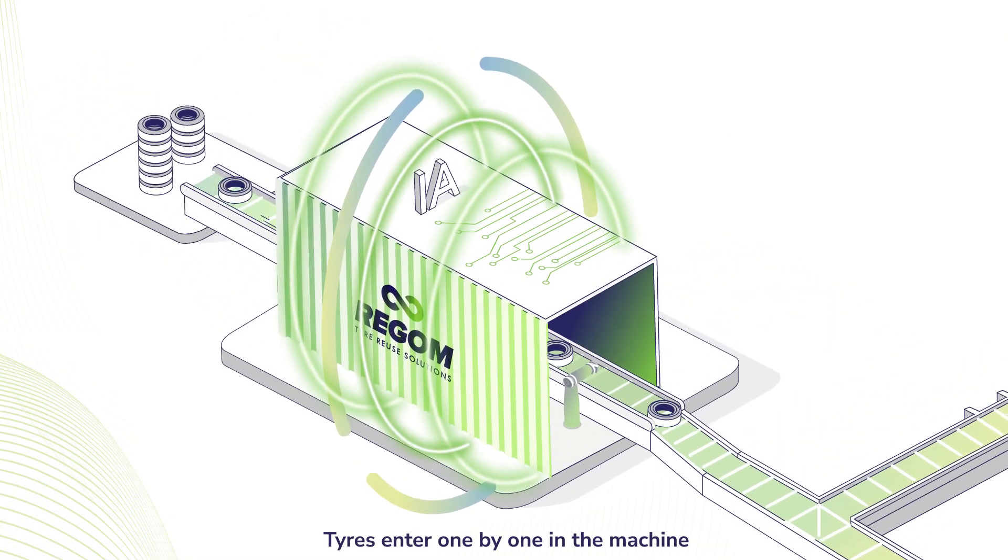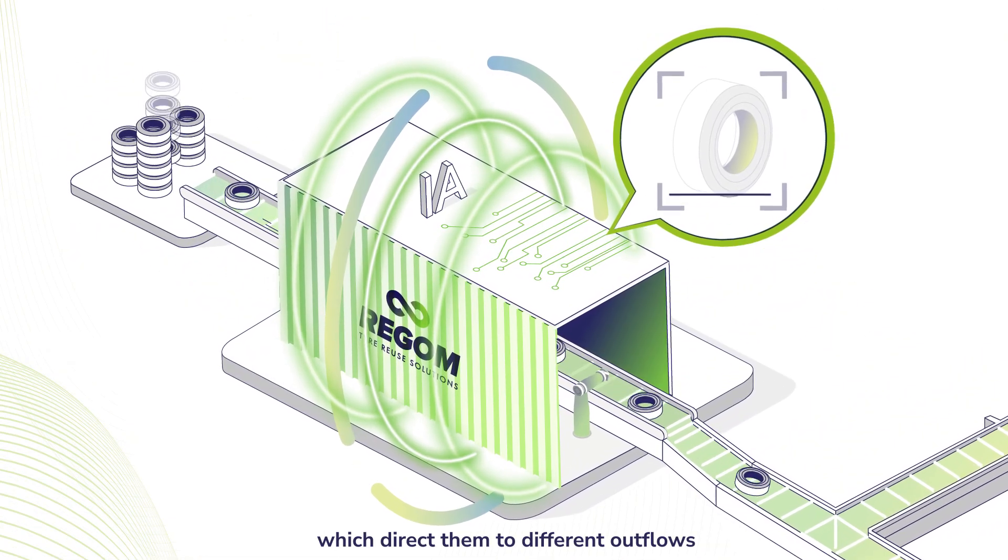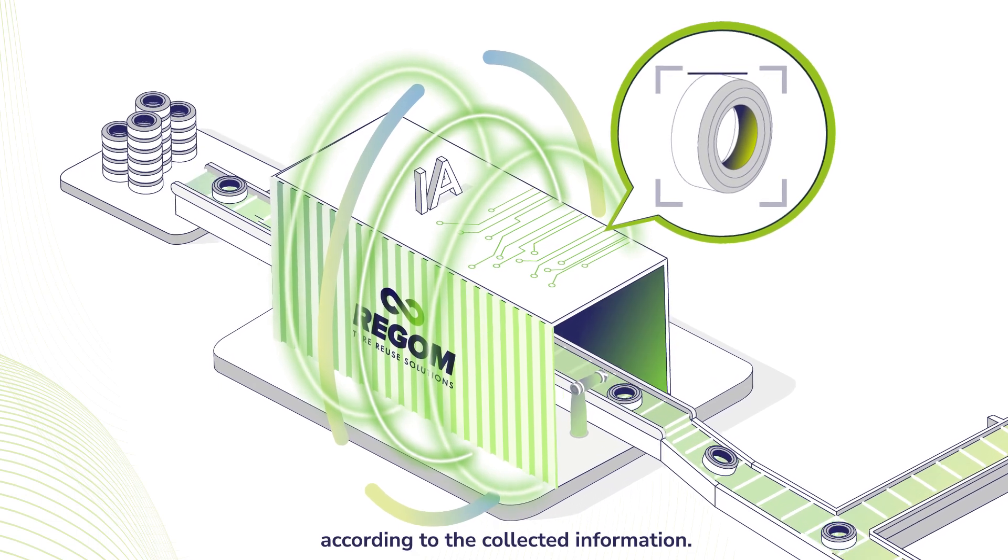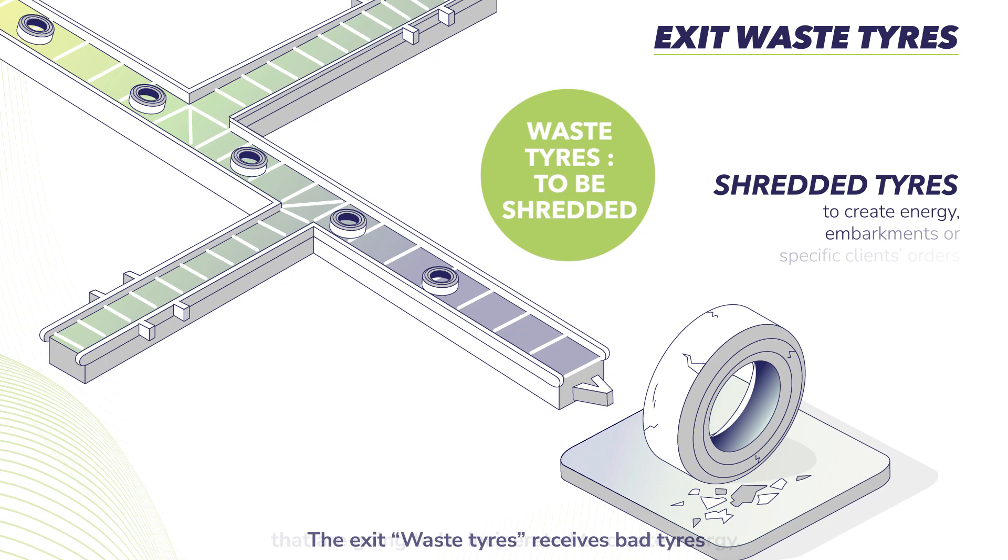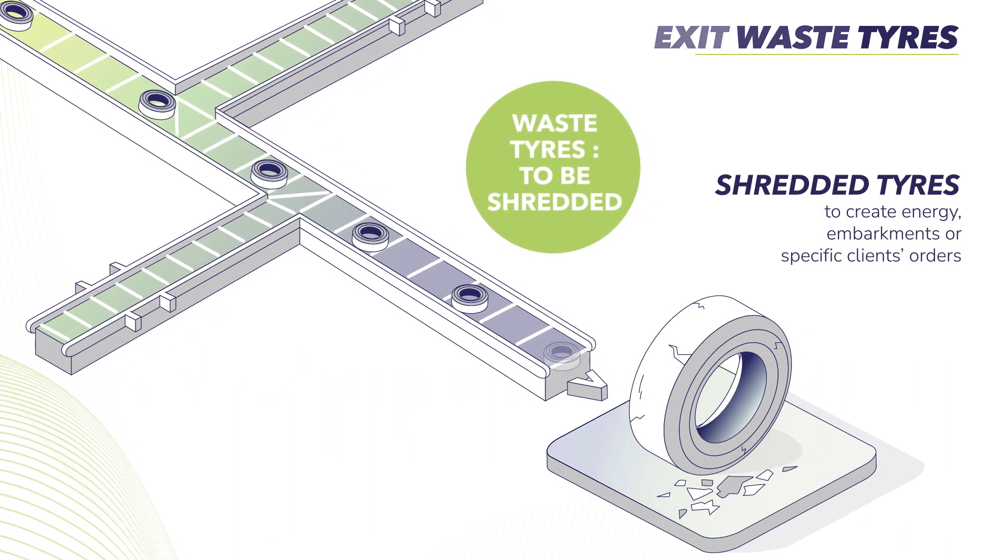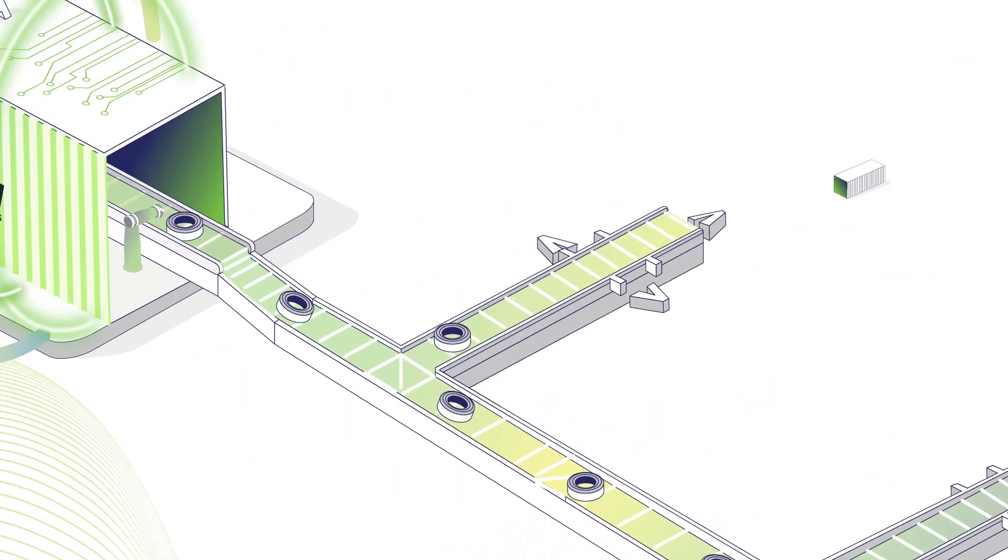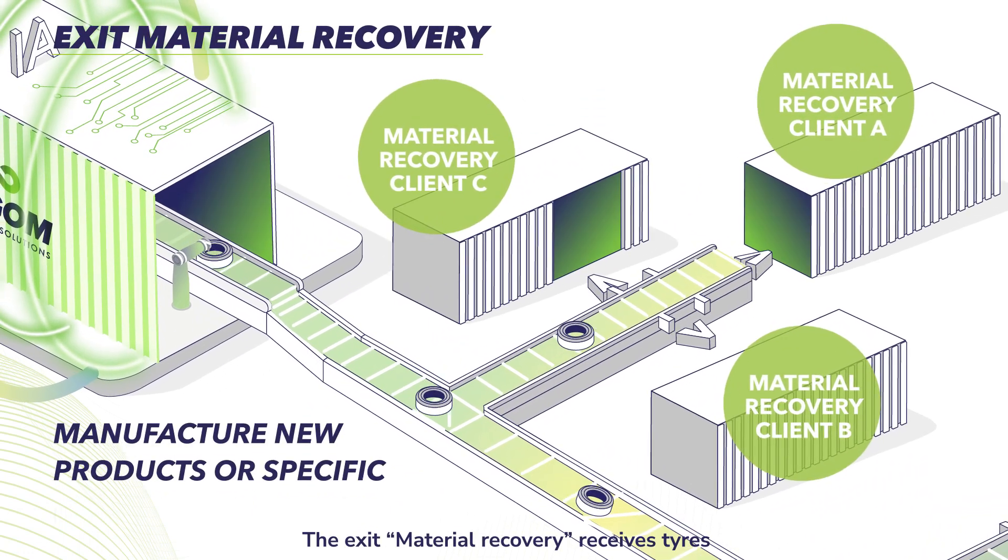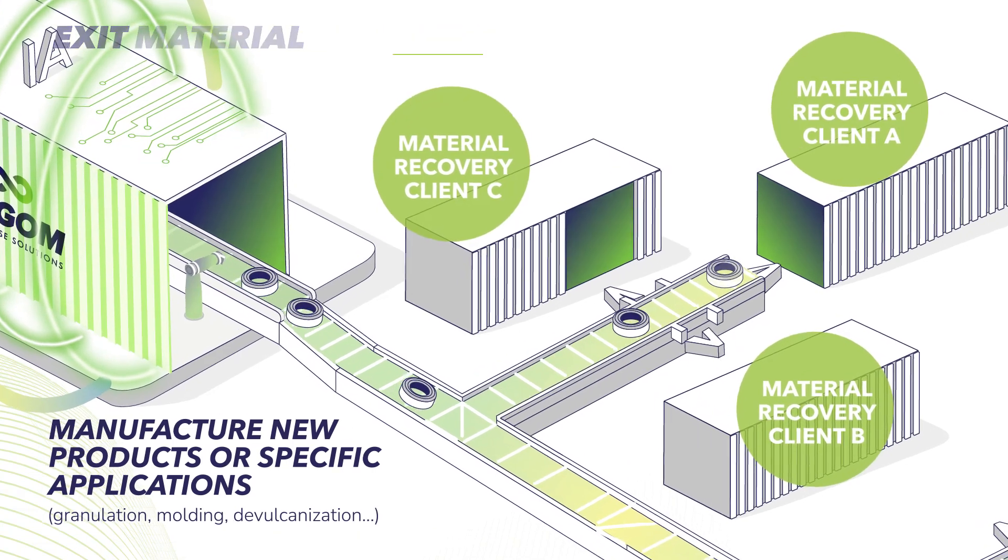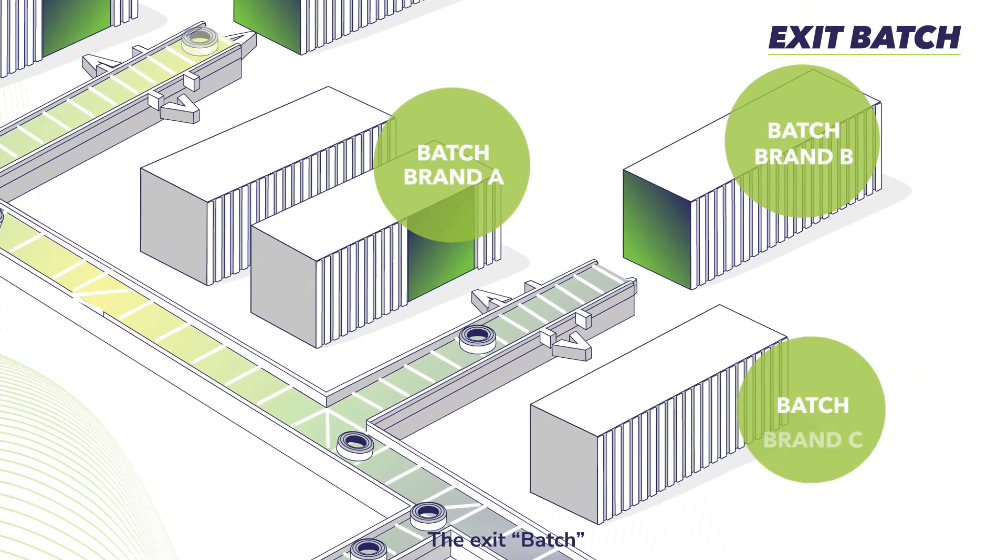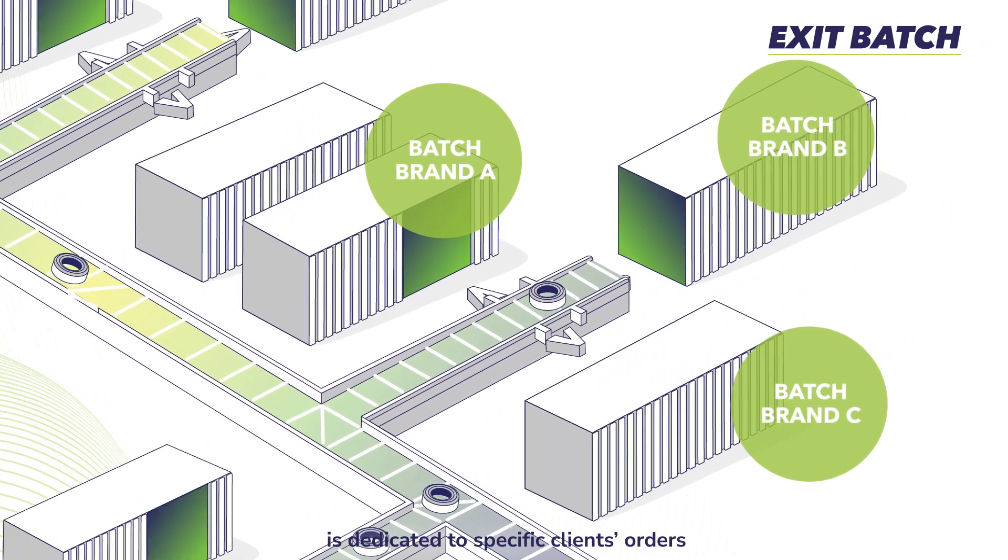Tires enter one by one in the machine which directs them to different outflows according to the collected information. The Waste Tires exit receives bad tires that are going to be incinerated to create energy. The Material Recovery exit receives tires that will be used to manufacture new products. The Batch exit is dedicated to specific clients' orders.